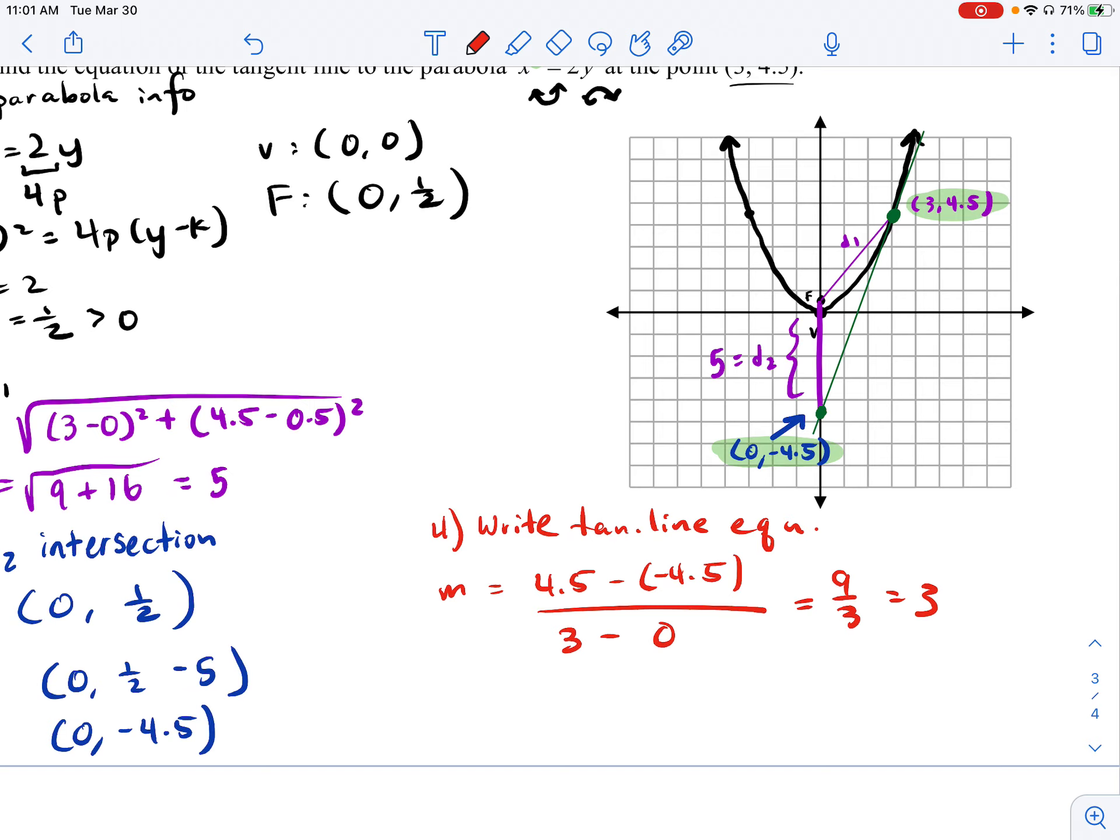And since we already have a y-intercept in this case, if we didn't have the y-intercept, we would just use point-slope form and simplify. But we can just say then y equals our slope 3x and our y-intercept minus 4.5. And there is our tangent line equation.